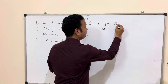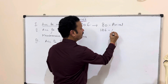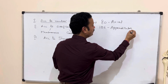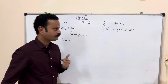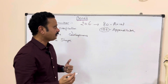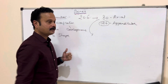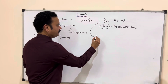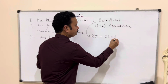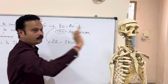So axial skeleton: 80 bones. Appendicular skeleton, the bones in the limbs: 126. In the axial skeleton, in the midline, 22 bones are in the skull.